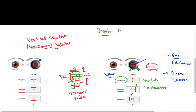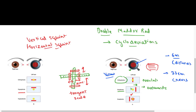Sometimes a question is asked regarding the double Maddox rod test. In the double Maddox rod test, we put the Maddox rod lens in front of both eyes. It is used to measure cyclo deviations — for example, in superior oblique palsy, there can be both horizontal and vertical deviation, called cyclo deviation. So the double Maddox rod test is used to measure cyclo deviation. These are the important points regarding the Maddox rod and Maddox tangent scale.